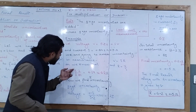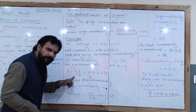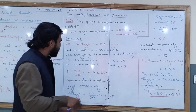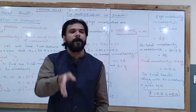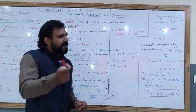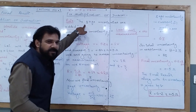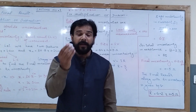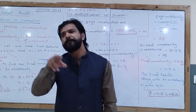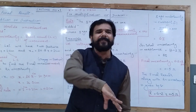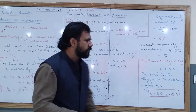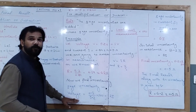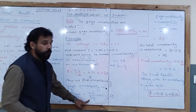The question is: up to what extent is the resistance value uncertain? We apply the rule that percentage uncertainties are added. First, we find the percentage uncertainty in voltage: (least count / measurement) × 100 = 0.1 / 5.0 × 100 = 2%.